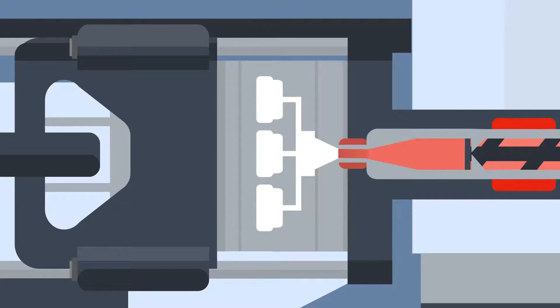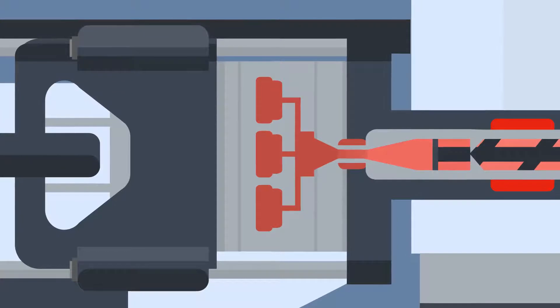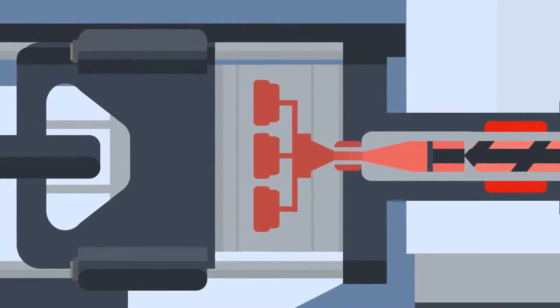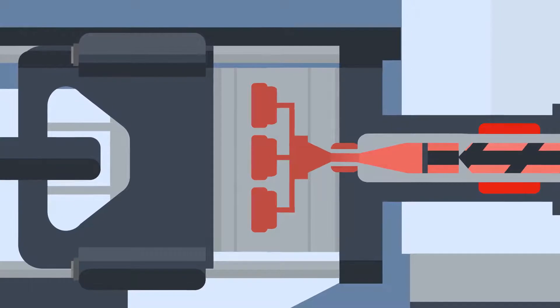Once the clamp pressure is at an optimum level, the plastic is injected by a screw at high speed and pressure into the cavity. A gate inside the tool helps to control the flow of the plastic.